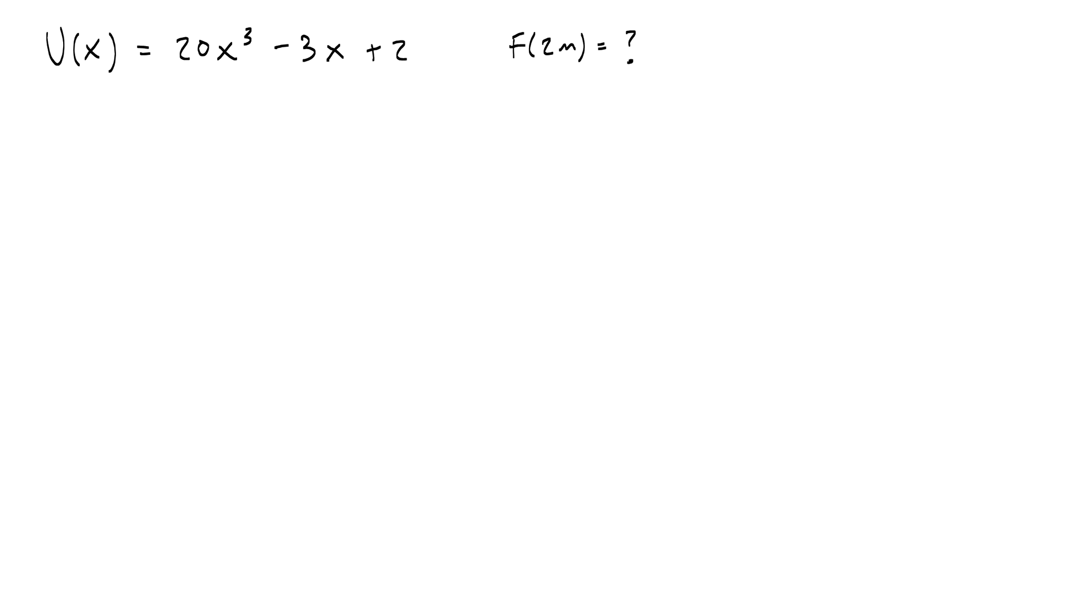Well then we would say, okay, the negative force is equal to the derivative with respect to x of that function. And then I just take the derivative of this function. The derivative of 20 x cubed, I'm going to reduce x by 1 and then multiply by 3, so I get 60. Then I'm going to have minus 3, and the 2 goes away. So I know negative F equals 60 x squared minus 3, or the force is negative 60 x squared plus 3.